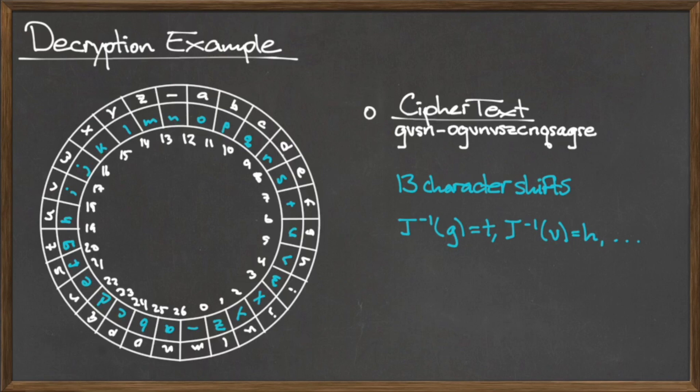To decode the ciphertext, we compute the image for each character in the ciphertext under J-inverse. The image of G under J-inverse is T, the image of V under J-inverse is H, and so on. Computing the images for each character in our ciphertext under J-inverse, we recover the plaintext, the Math Help Center, which is where you should go if you're struggling with these types of problems.